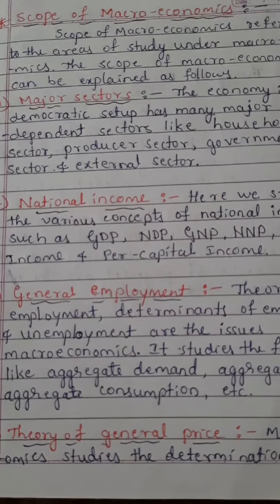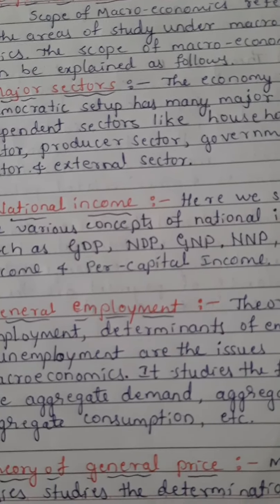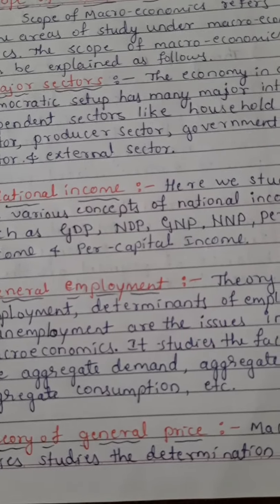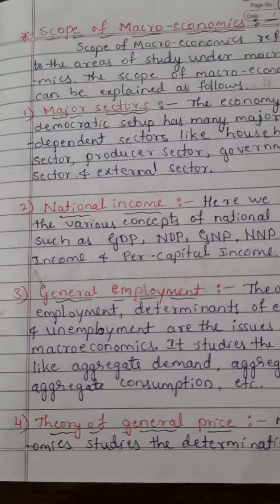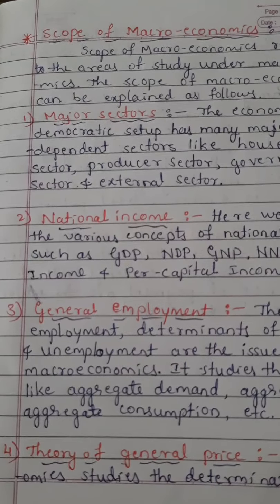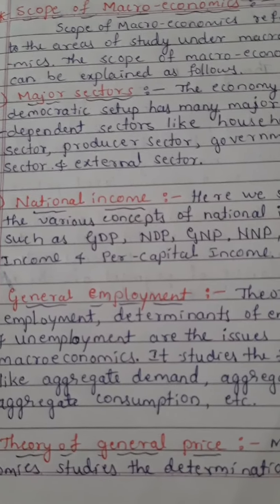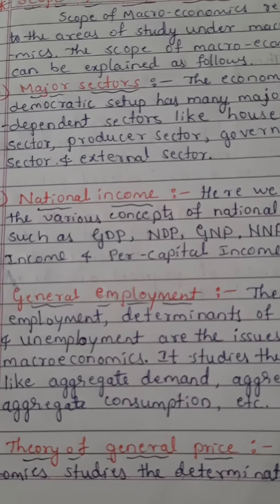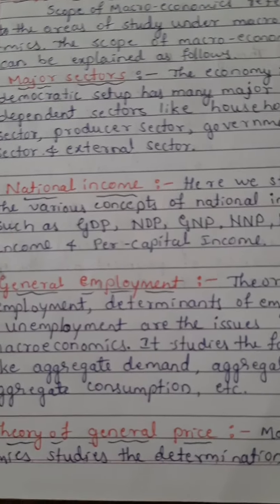Second scope — national income: We study the various concepts of national income such as GDP, NDP, GNP, NNP, personal income, and per capita income. This will be studied completely in the second chapter — national income analysis — covering the meaning of national income and all these measures in detail.